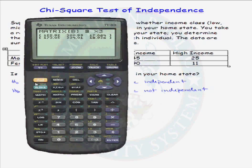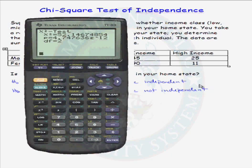Going back to the previous screen, we have a p-value that is extremely small. It would be almost impossible to observe this two-way table if the two variables — income class and gender — were independent. Because of the small p-value, we reject the null hypothesis and conclude that income and gender class are not independent. Our Chi-squared test is complete.